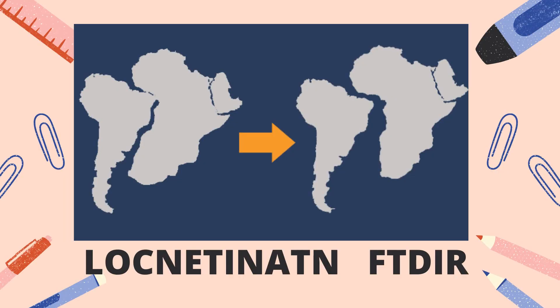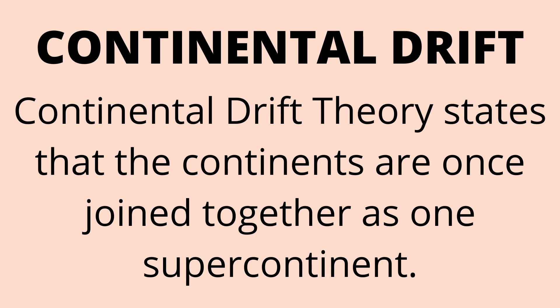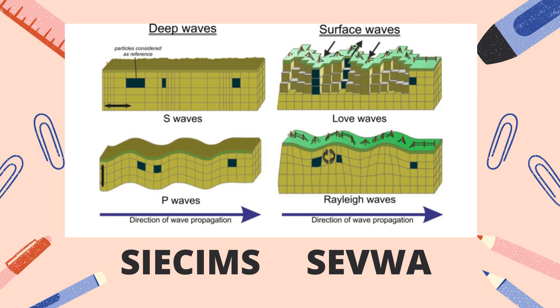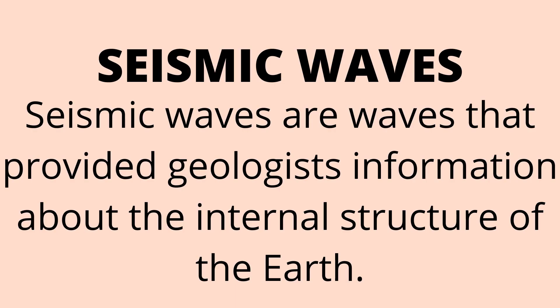Next set. The concept is continental drift theory. This theory states that the continents were once joined together as one supercontinent. Next set. You're right! The next concept is seismic waves. Seismic waves are waves that provided geologists information about the internal structure of the Earth.